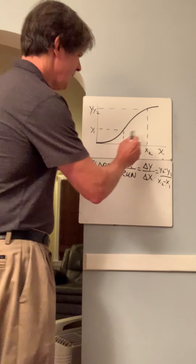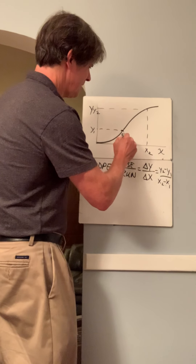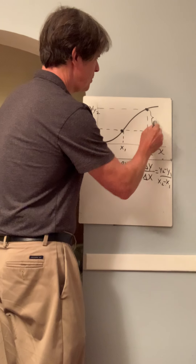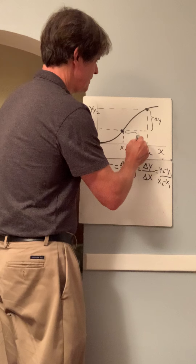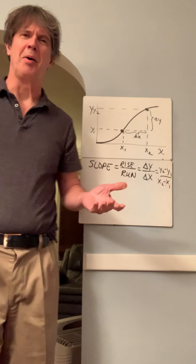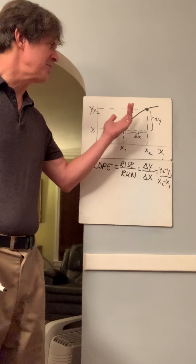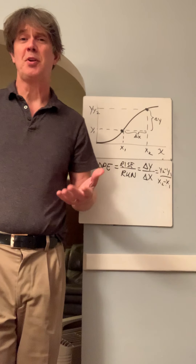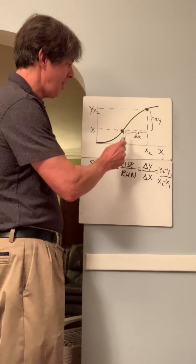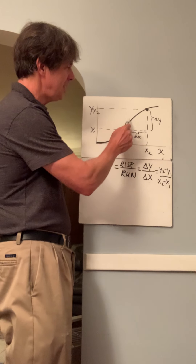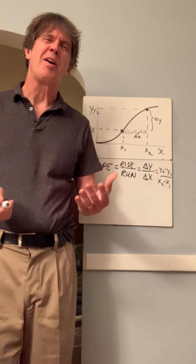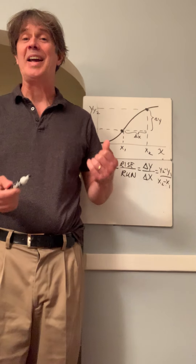So this slope got defined like this: these two points, delta y and delta x, and there's your slope. There's a problem though — it's not a straight line. It doesn't have any particular slope. If you're talking about how steep the hill is, it depends on where on the hill you are. It's clearly steeper here than it is there. So how can you even talk about the slope at a point?